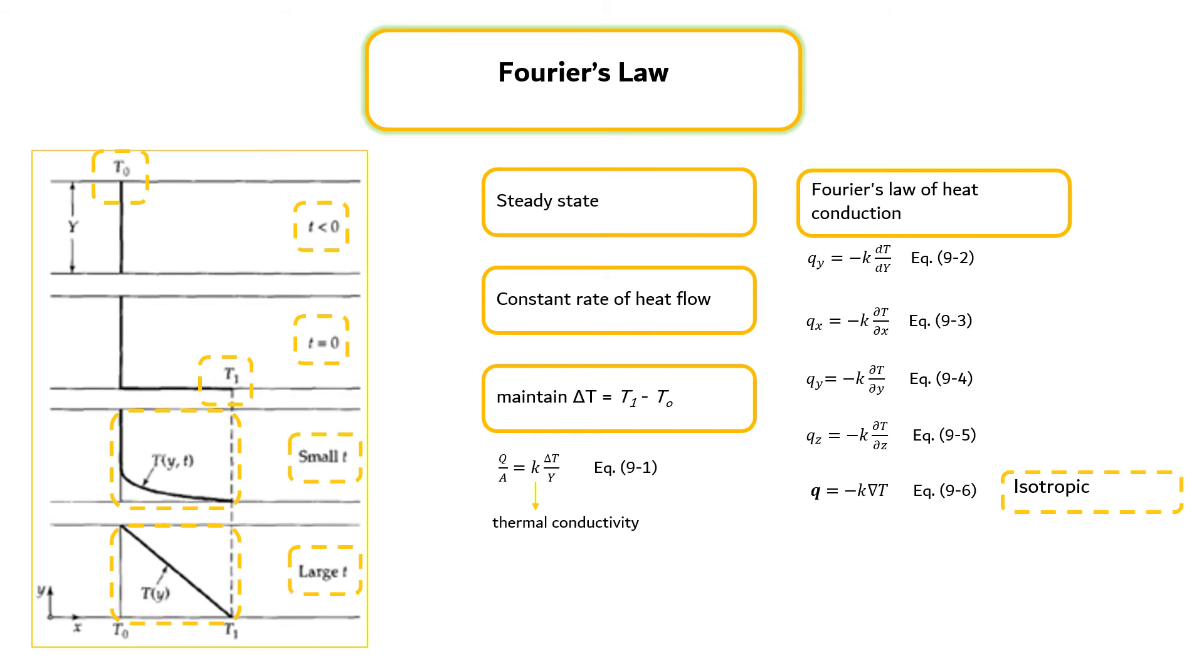Some solids, such as single non-cubic crystals, fibrous materials and laminates, are anisotropic and the heat flux can be expressed by equation 9.7, in which K is a symmetric second-order tensor called the thermal conductivity tensor. Thus, the heat flux vector does not point in the same direction as the temperature gradient.